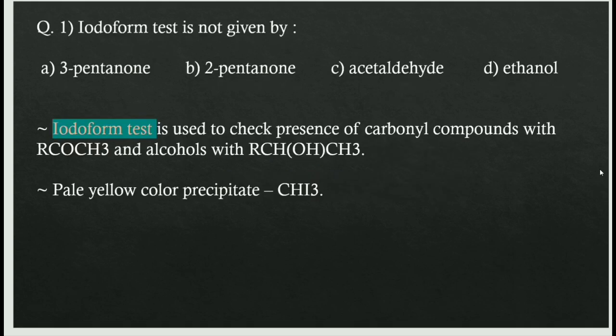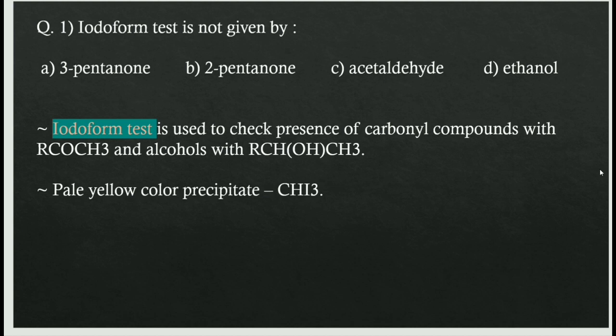First question: iodoform test is not given by which compound? The iodoform test is used to check the presence of carbonyl compounds with structure RCOCH3 and alcohols with structure RCHOHCH3. Compounds containing these structures will give a positive iodoform test, and the result is a pale yellow precipitate, CHI3.